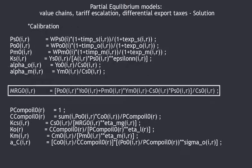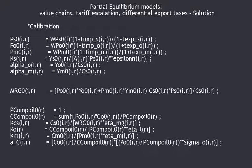Then you have PO0, YO0, PM0, YM0, CS0, and PS0 — which means you can calibrate the crush margin MRG0 of seeds in country R.